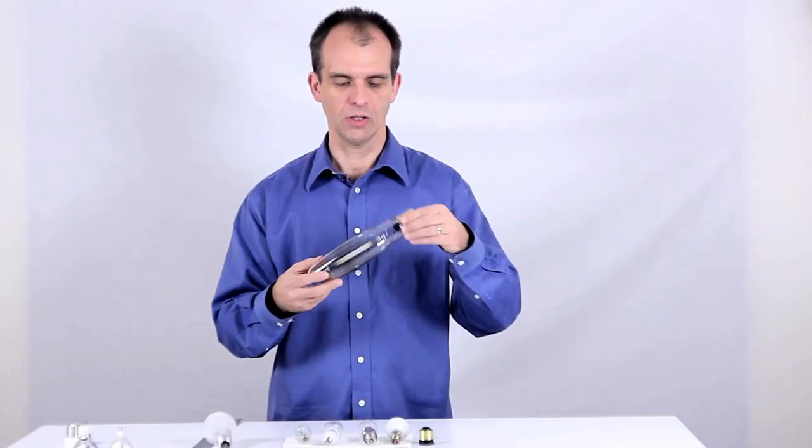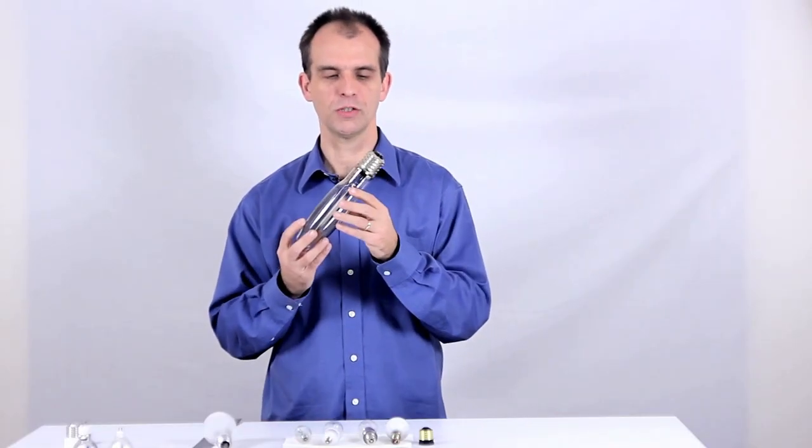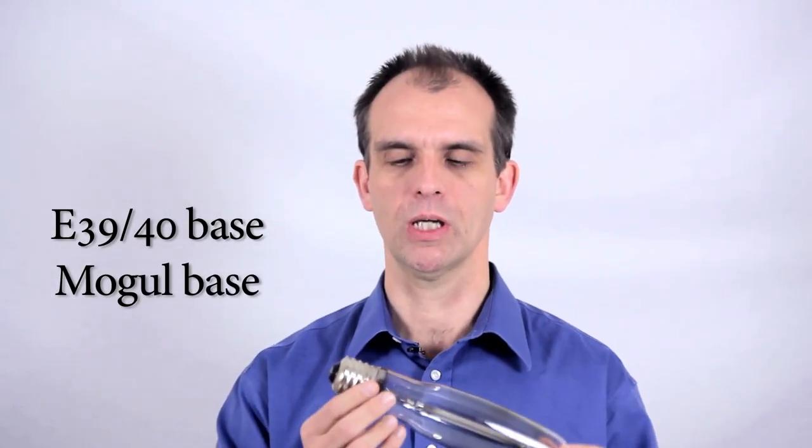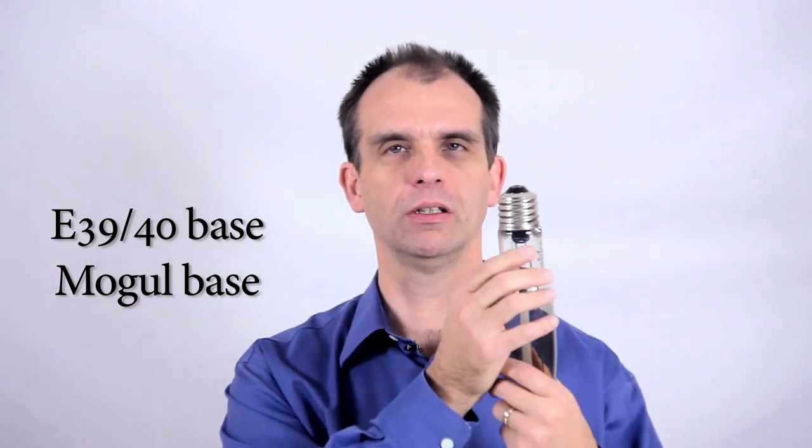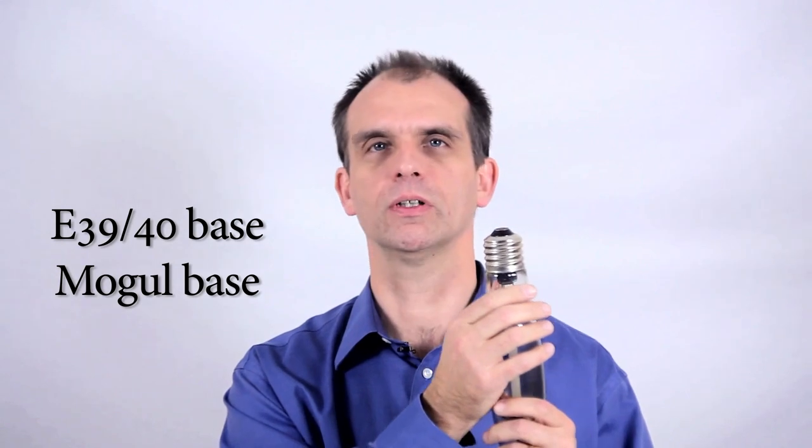And we have this odd-looking creature here, which is an industrial type of light, which is an E39 or E40, also known as a mogul base. It's more for an industrial type of lighting. We won't talk about that too much. You probably won't find this too often unless you're into industrial lighting scenario. But it's a gigantic screw base and it's out there too.